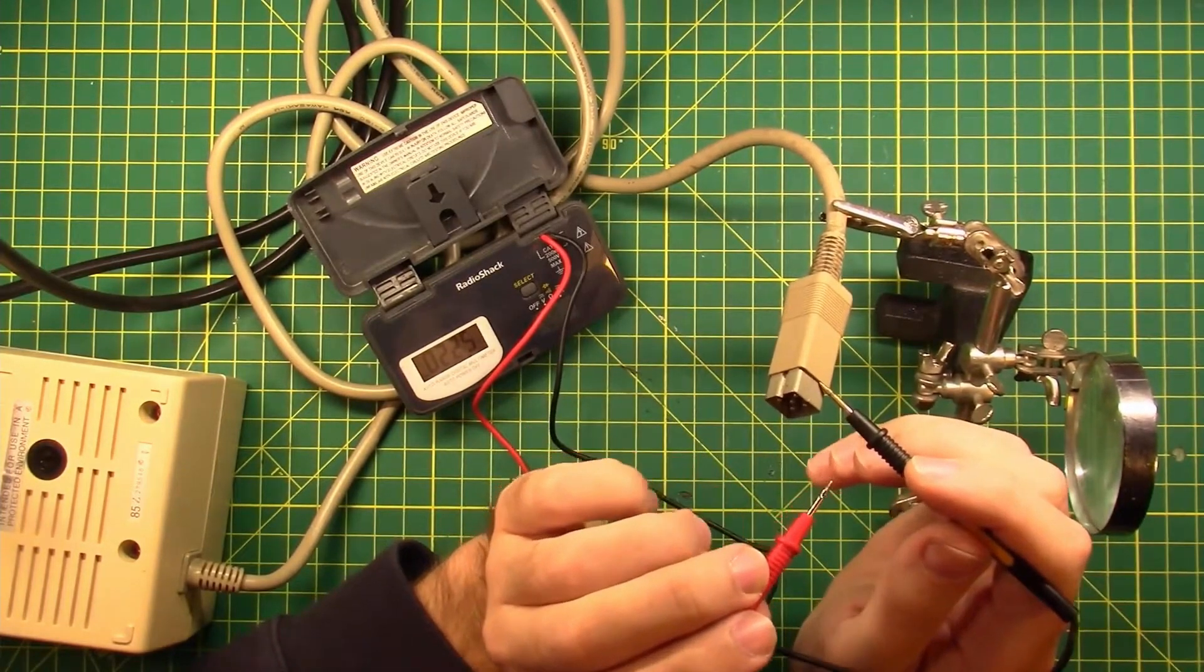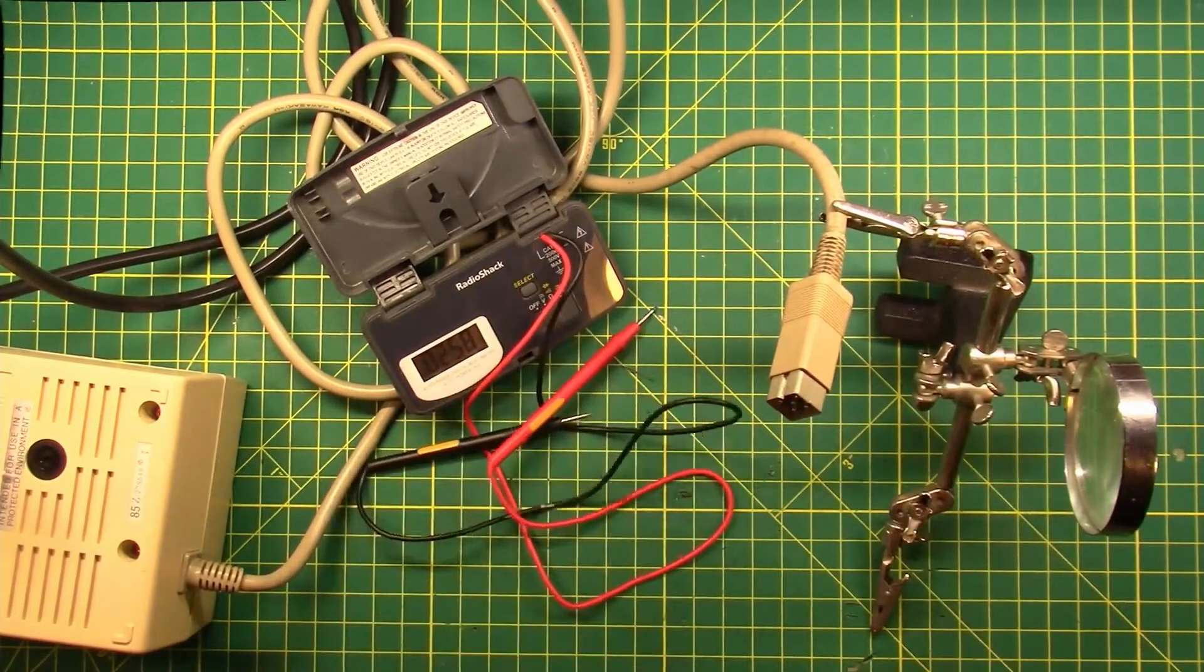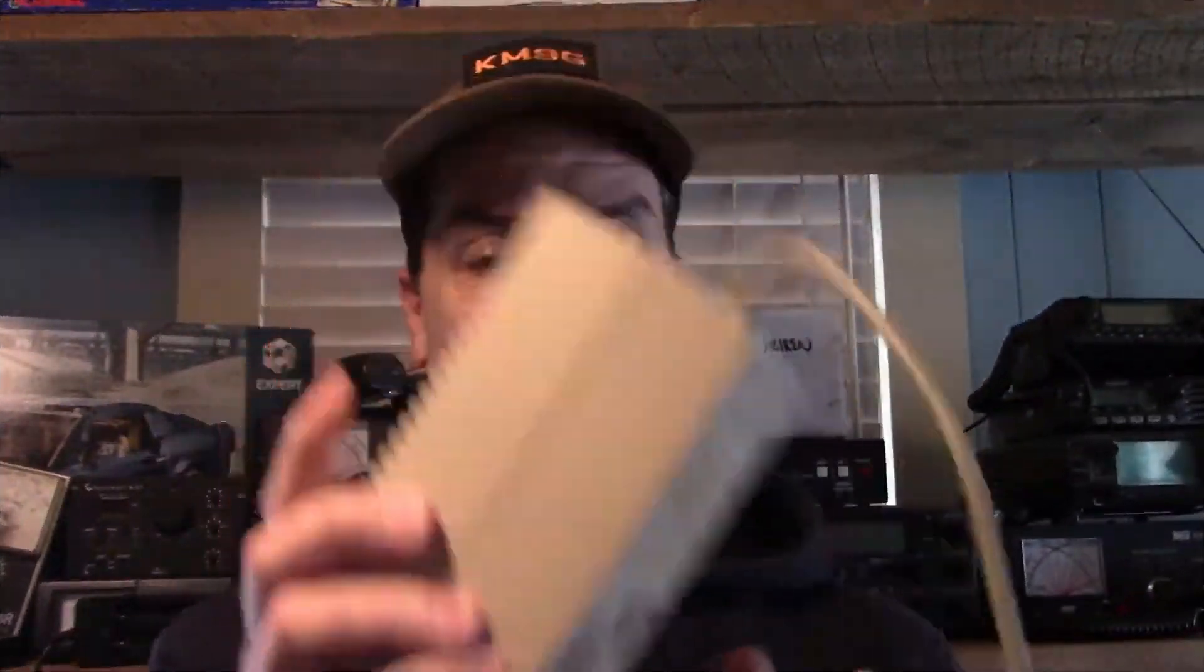9 volts and ground are the two pins on the right side. 5 volts is also supposed to be the outside. 5.17 volts. We are good to go. She's all fixed.